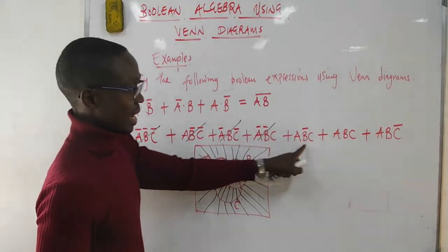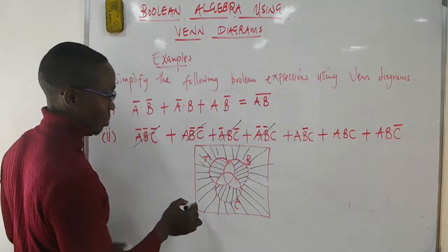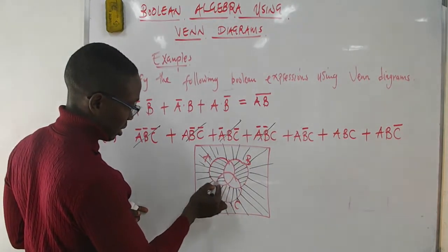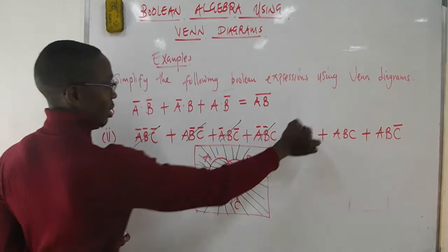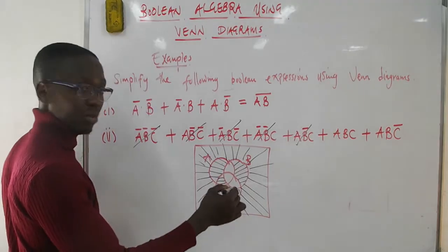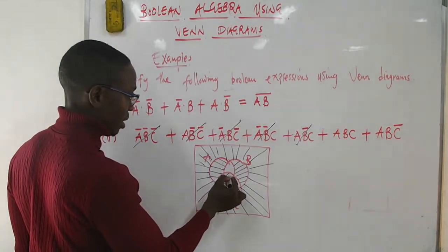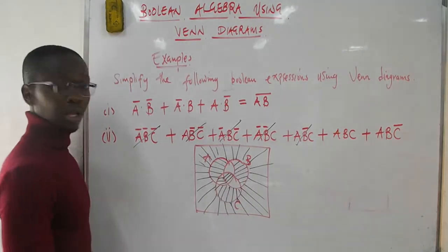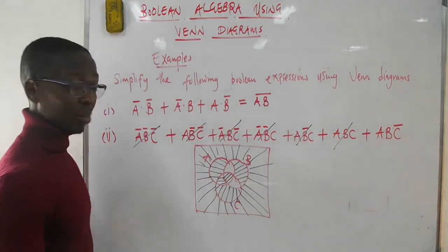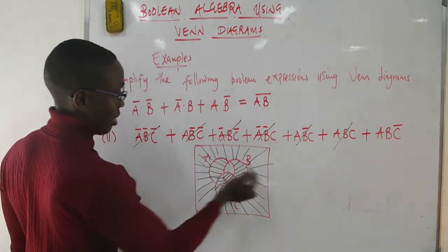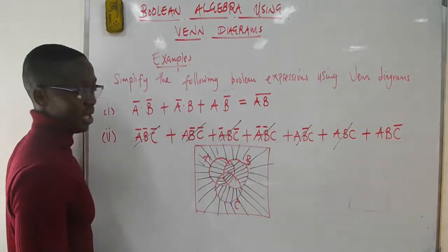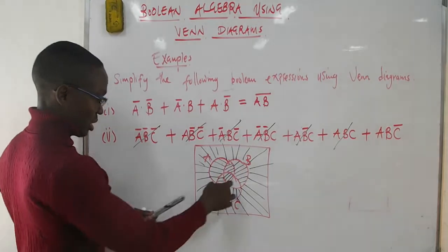Next, AC appears where B does not - this intersection. Then we have ABC where everything appears. The last one has AB appearing but not C. So what we remain with is this region here.